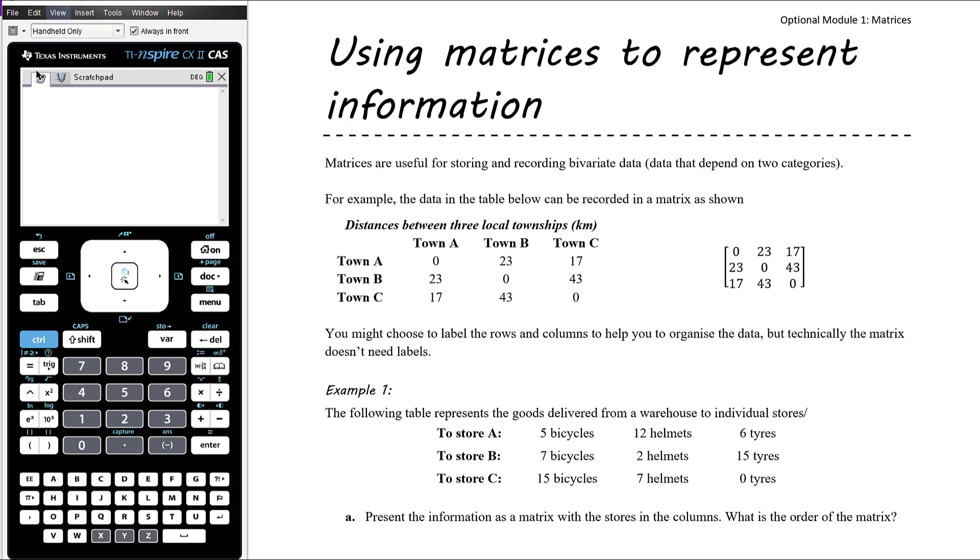But here we have a table of data and in it we have recorded the distances between three local townships. And we could record that information in a matrix. So we've clearly got nine pieces of data in a three by three format that can simply be transformed into a matrix. In this instance, we have a really clear symmetric matrix. So remember a symmetric matrix ignoring the leading diagonal, but we have a mirror image either side of this leading diagonal.